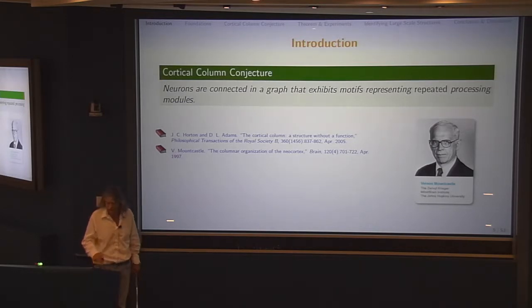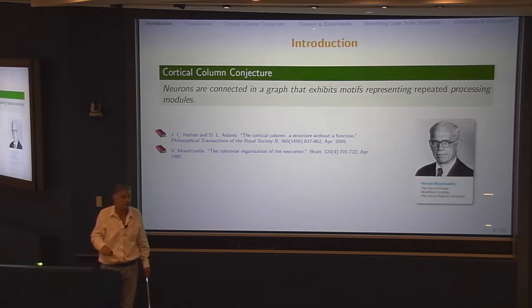So here's the cortical column conjecture: Neurons are connected in a graph that exhibits motifs representing repeated processing modules. The first thing you think is that doesn't look like a null hypothesis for a Neyman-Pearson hypothesis test. It's not clear enough yet. We're going to walk through this and eventually get to something that I can call H naught. There's a couple of things about this slide. First, this is a structural conjecture.